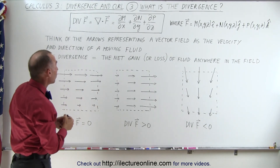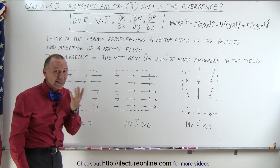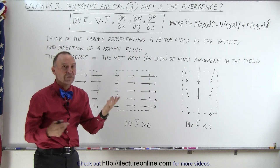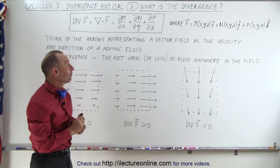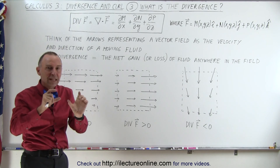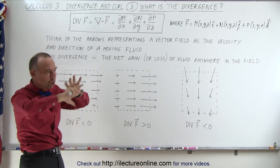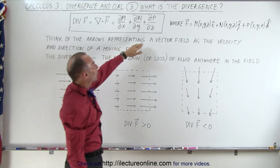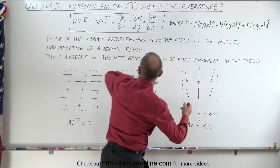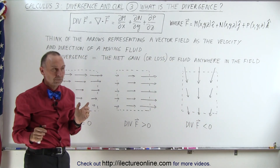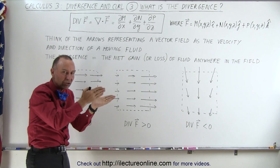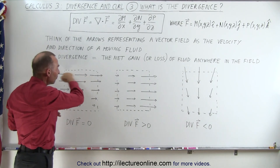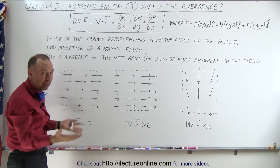Now, what is that scalar quantity? What does it represent? The best way to think about it: if you think of the arrows that represent a vector field — the arrows representing direction and magnitude of a vector field that changes through the x, y plane or the x, y, z volume — if we allow those arrows to be representative of the velocity and direction of a moving fluid, think of a fluid moving in a certain direction at a certain velocity. The velocity could change depending upon where you are in the fluid.